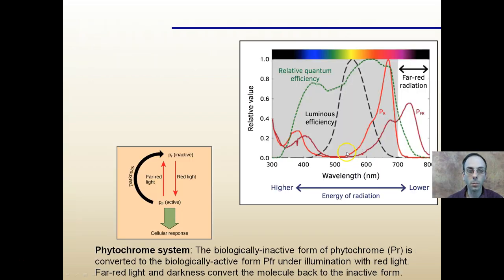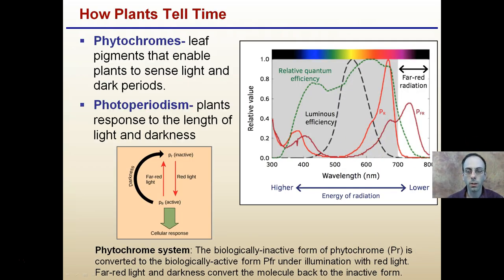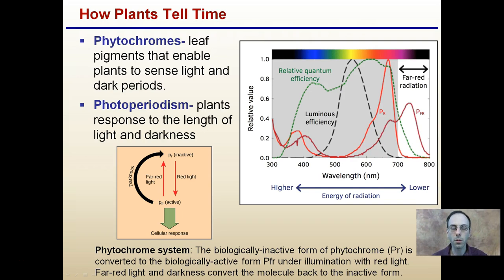Let's investigate short and long-day plants a bit more. How do plants perceive long and short days — how do they tell time? They have two different ways. Phytochromes are leaf pigments that enable plants to sense light and dark periods. This helps the plant determine photoperiodism, which is the plant's response to the length of light and darkness. The phytochrome system has a biologically inactive form called PR, which is converted to the biologically active form called PFR under illumination with red light.